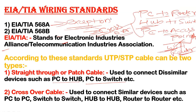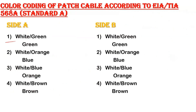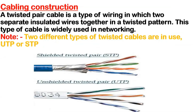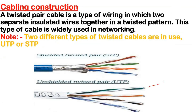Now let's look at the color coding. We have two types — straight-through and crossover — and two standards: 568A and 568B. Looking at the table, there are a total of four pairs in a twisted pair cable, and in every pair there are two wires, giving eight wires total.